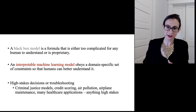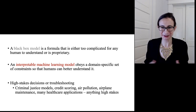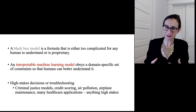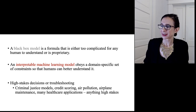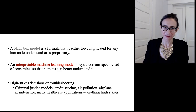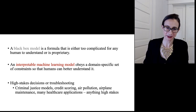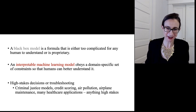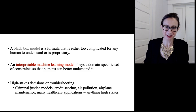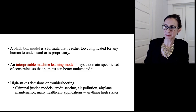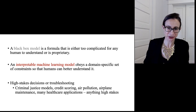These are useful anytime it would be really bad if something went wrong — for example, criminal justice models for predicting future crime, credit scoring models that predict default on a loan, air pollution models that determine whether it's safe to go outside, airplane maintenance models for prioritizing airplane repairs, many healthcare applications — anytime it would be really bad if an AI model went wrong.